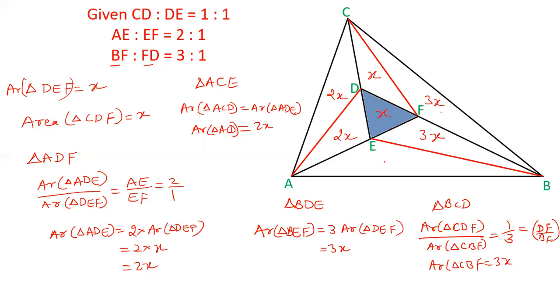And only one triangle is left, which is ABE. So in triangle ABF, AE and EF are in the ratio 2:1. Therefore area of triangle ABE is equal to twice BEF. Because this line is 2 and 1, so this area will be double. This will be double of this. So area of triangle ABE is double of 3X, that is 6X. This area is 6X.